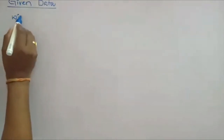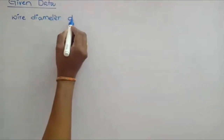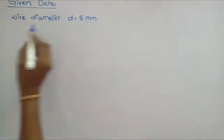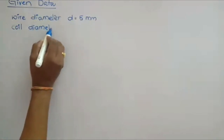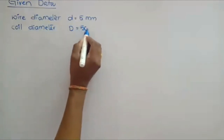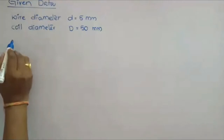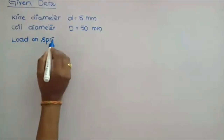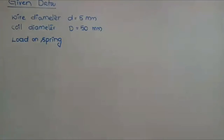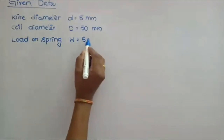The spring is made up of wire of diameter — wire diameter is 5 mm. Coil diameter capital D is equal to 50 mm. Load on the spring W is equal to 500 Newtons.